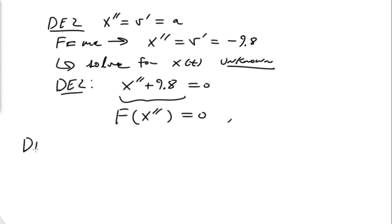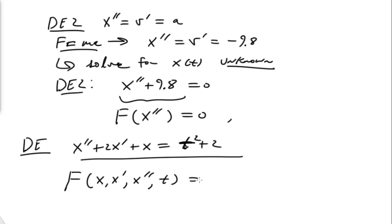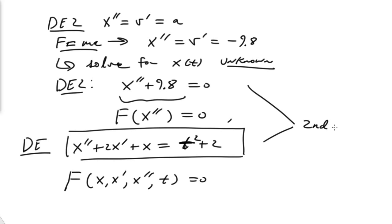I'll give another example that I can't derive from a specific physical law. We could write an equation like x double prime plus 2x prime plus x equals t squared plus 2. This can be expressed in the general form F of t, x, x prime, x double prime equal to zero. Both of these last examples are second-order DEs. And of course we could go further — third order, fourth order equations, and so on. That's the nature of DEs.